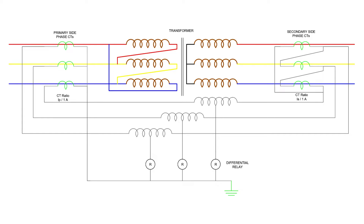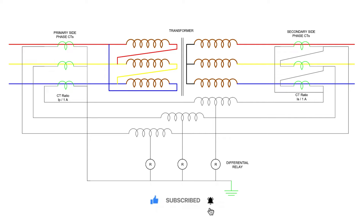But if any major fault occurs inside the transformer, due to which the normal ratio of the transformer is disturbed, then the secondary currents of both CTs will not remain the same. A resultant current will flow through the current coil of the differential relay, which will actuate the relay and inter-trip both the primary and secondary circuit breakers.